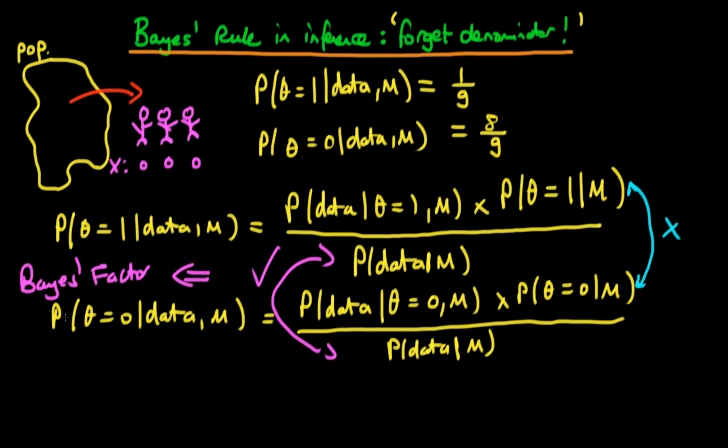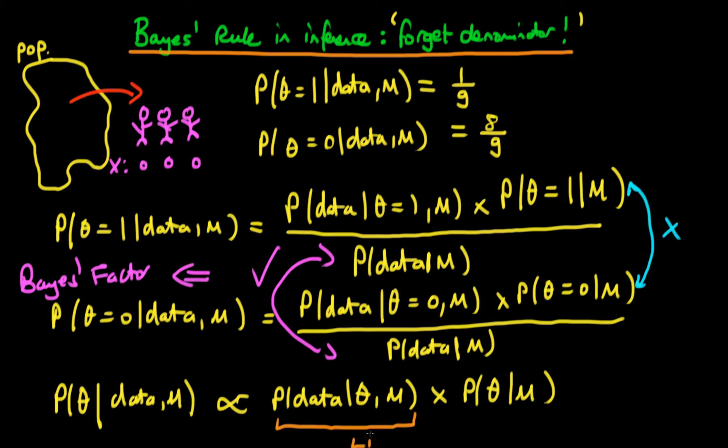But what I want to say here is that essentially we can regard this denominator as being fixed, because it doesn't depend on theta. So no matter what value of theta we choose, this denominator here is fixed, which means that in this particular circumstance and in any circumstance, the posterior probability of theta given our data and given our model choice is proportional to the likelihood, so the probability of our data given our value of theta and given our model choice, times the prior, which is the probability of theta given our model choice. Just to be clear, this first term here is the likelihood, and the second term here is the prior.